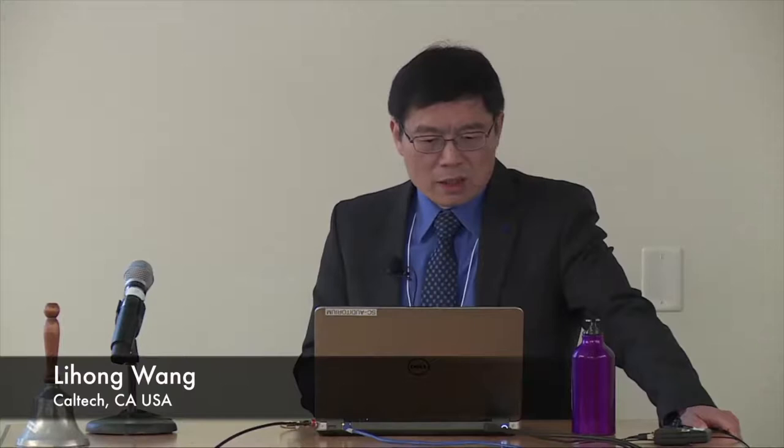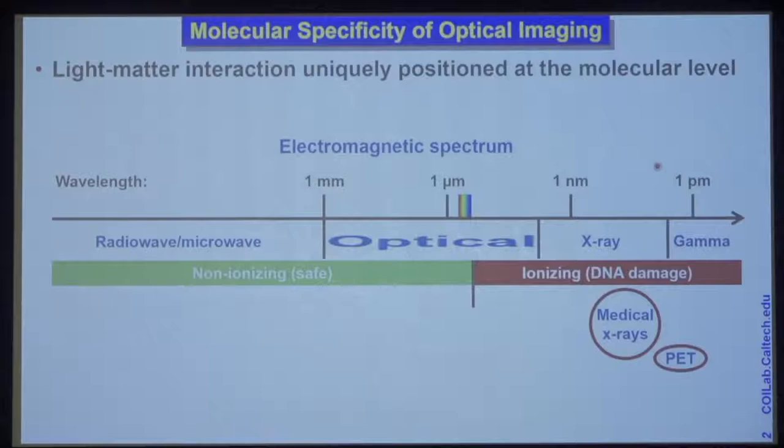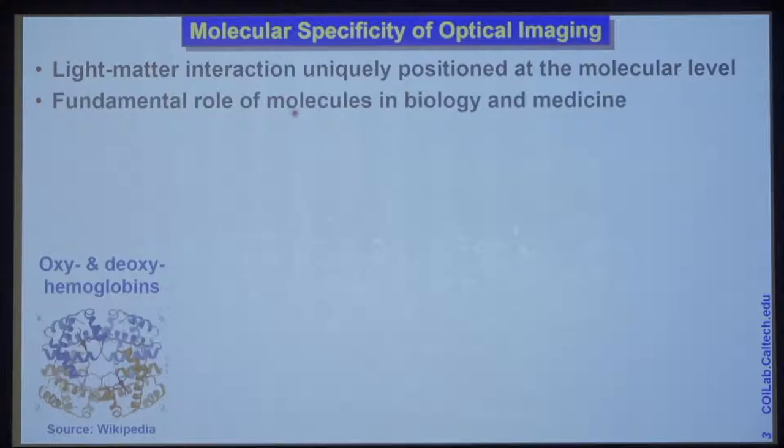Over the entire EM spectrum, which covers at least 20 orders of magnitude in terms of photon energy or wavelength, light occupies this tiny region. But this is the only region that provides molecular specificity, because from the physics perspective, we know that light-matter interaction occurs at a molecular level. Given the fundamental roles of molecules in biomedicine, we really have to work on this problem despite all the challenges we face.